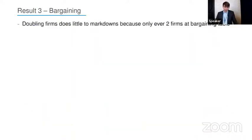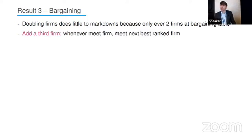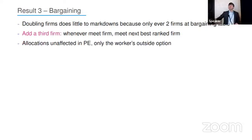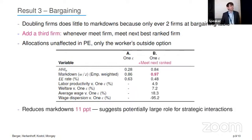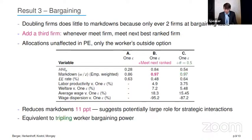When we doubled the number of firms, we were surprised by the small effect on markdowns, and we realized that a lot of the concentration was hardwired in the duopsony in the bargaining process. To investigate this, we add a third firm to the bargaining table: whenever you meet a firm, you also meet the next best ranked firm. In partial equilibrium this doesn't affect allocations — you always flow to the top ranked firm — it only moves the worker's outside option. Starting from a baseline with a single amenity value to cleanly rank firms, bringing the third firm to the table reduces markdowns by almost 11 percentage points, suggesting a large role for strategic interactions — equivalent to tripling the worker bargaining power. We think much research needs to go into understanding the source of these strategic interactions and the bargaining protocol.